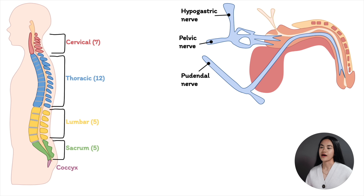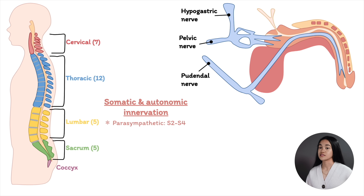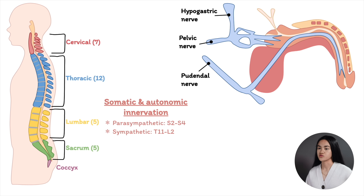The penis has both somatic (sensory and motor) and autonomic (parasympathetic and sympathetic) innervation. The innervation stems from the autonomic nervous system. The parasympathetic involves the S2 to S4 fibers, and the sympathetic involves T11 to L2, which is responsible for vascular smooth muscle contraction.